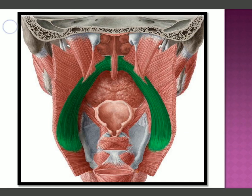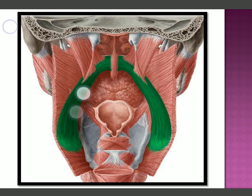In this figure, the palatopharyngeal muscle has been highlighted in green, running from the pharynx to the palate. This muscle also forms part of the bed of the tonsil.